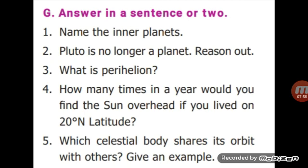Next question: what is perihelion? Perihelion is the Earth's closest position to the sun. Next, how many times in a year would you find the sun overhead if you lived on 20 degree north latitude? Answer: two times. Next, which celestial body shares its orbit with others? Give an example. Dwarf planets share their orbit with others. Example: Pluto and Neptune are the two celestial bodies in our solar system that share their orbit.